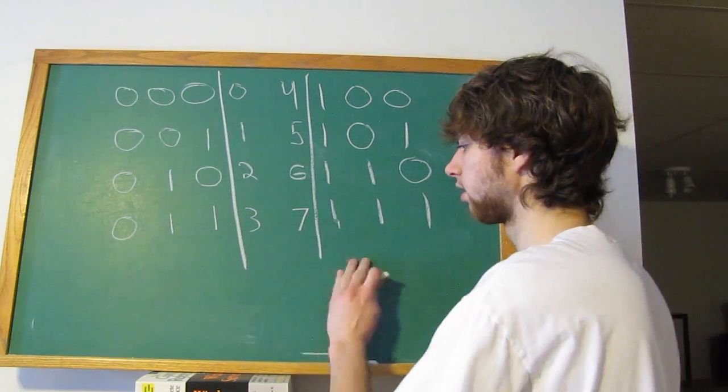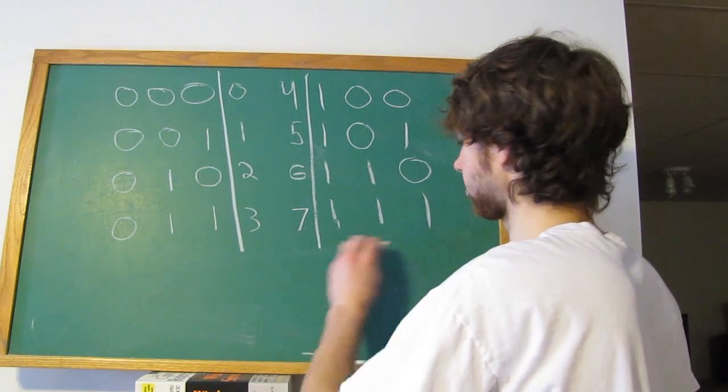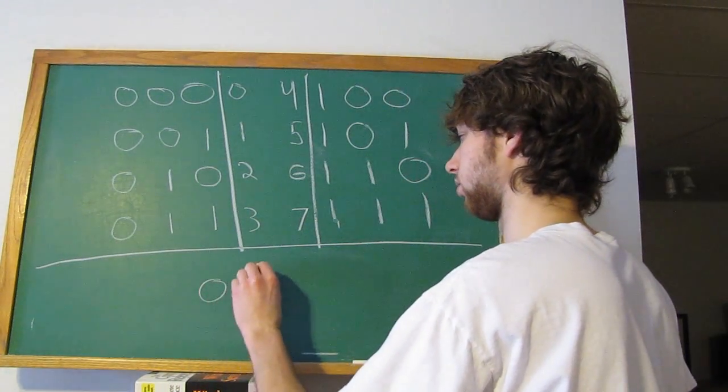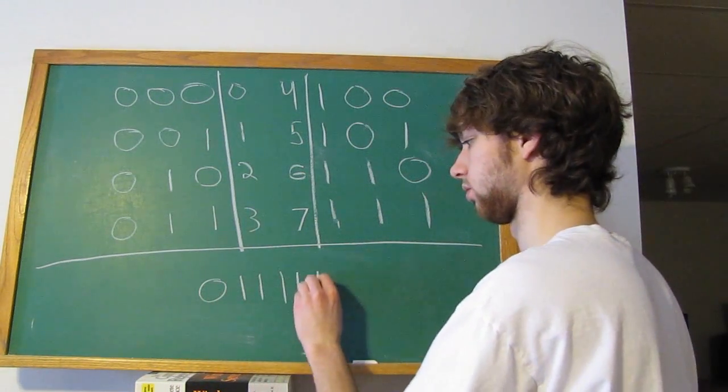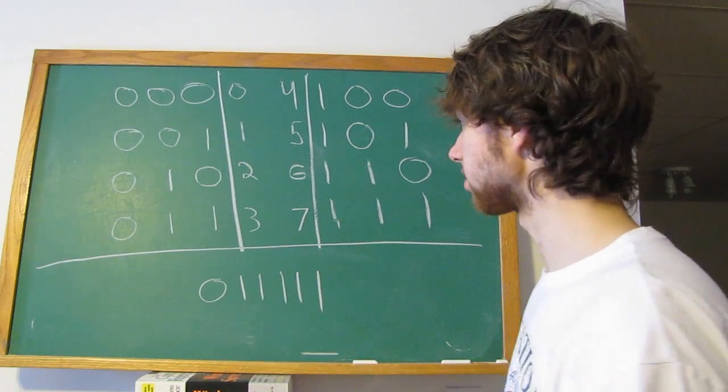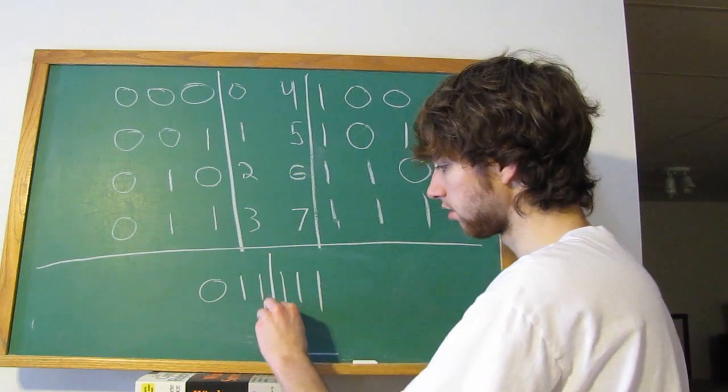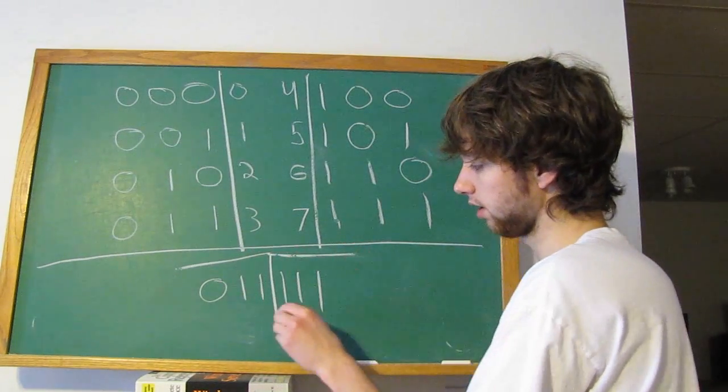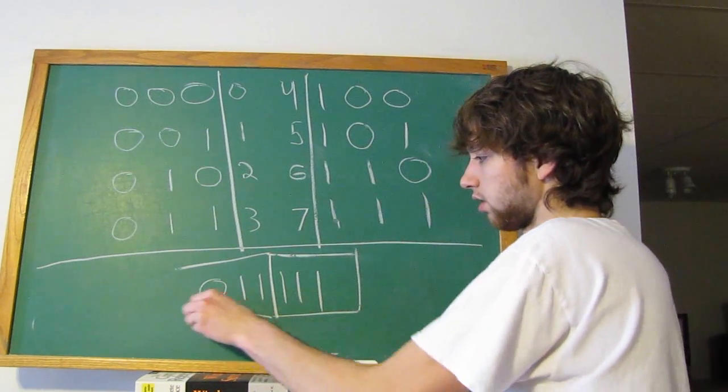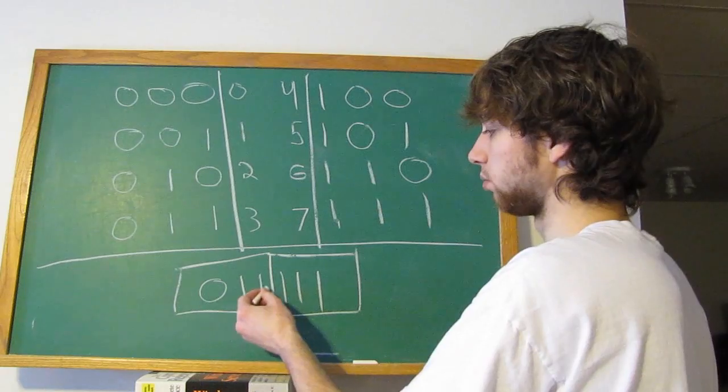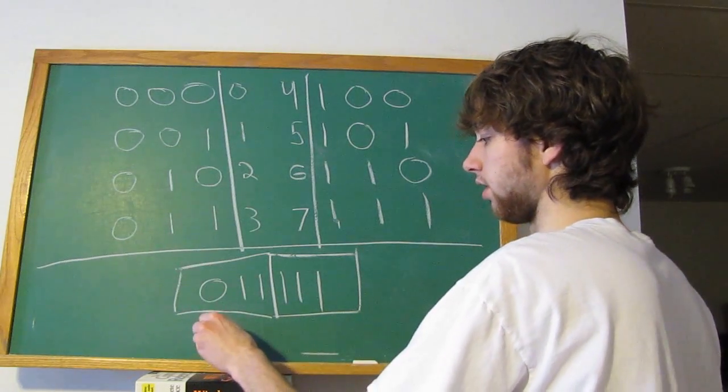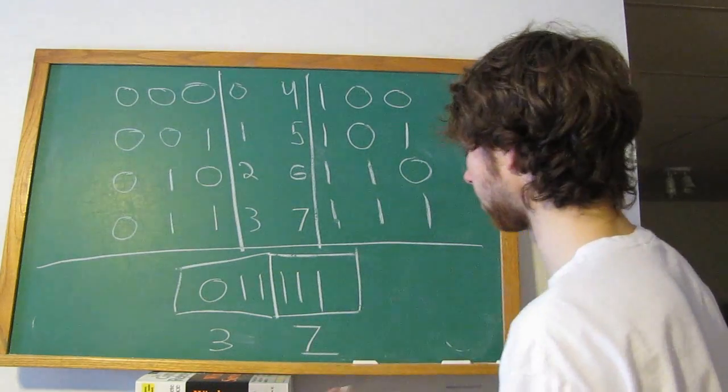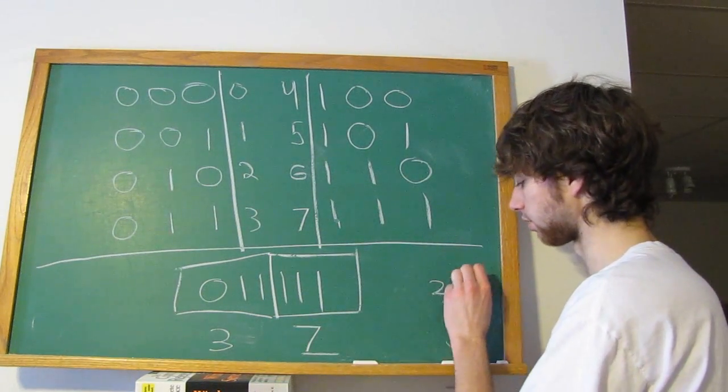So if we have a binary string, like let's say it's this, well we could break this up into groups of 3. And now we have this number and we have this number. Well, 011 would be 3. 111, that would be 7. So we can represent this using 37.